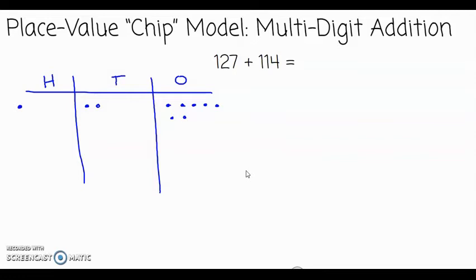Next I will represent the number 114 on my place value chart. This number has 100, one ten, and four ones. I will also show the algorithm on the side. Having the place value chart alongside the algorithm helps students better understand the process of addition.